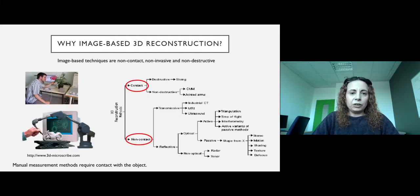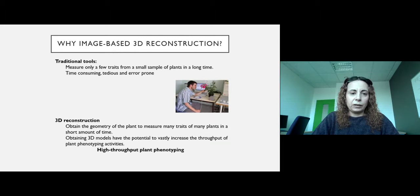So why do we use image-based 3D reconstruction for plants? One reason is image-based techniques are non-contact, non-invasive, and non-destructive. The manual measurement methods require contact with the object. With these traditional tools, we can only measure a few traits from a small sample of plants in a long time. This method is time-consuming, tedious, and error-prone.